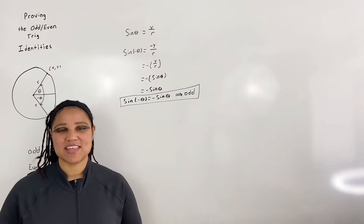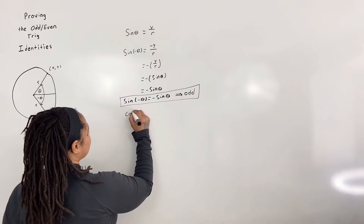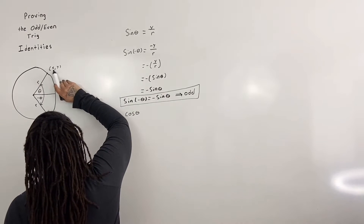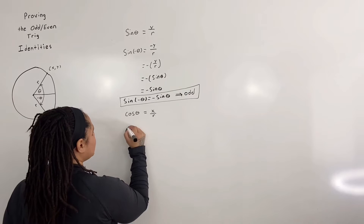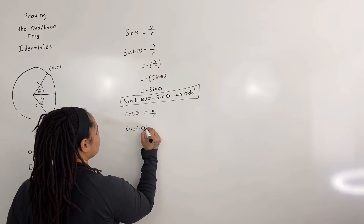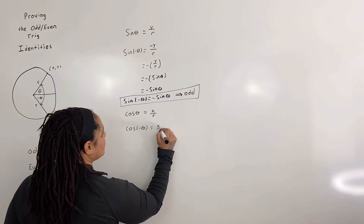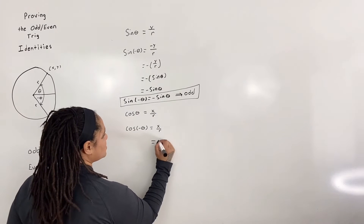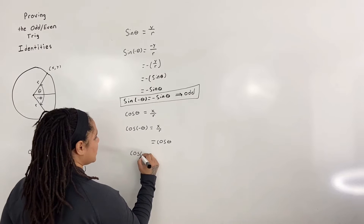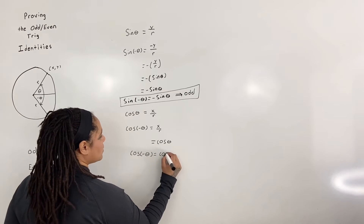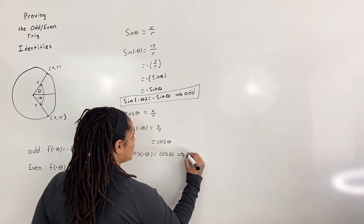Now let us prove that cosine is an even function. We know that cosine of theta is equal to x over r. So cosine of negative theta is also equal to x over r, which equals cosine of theta. So we see that cosine of negative theta is equal to cosine of theta, and by definition cosine is an even function.